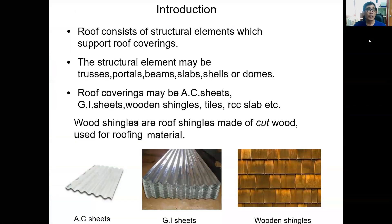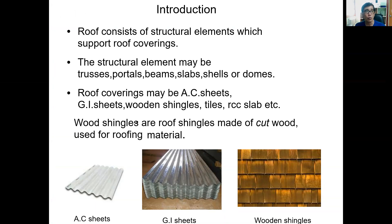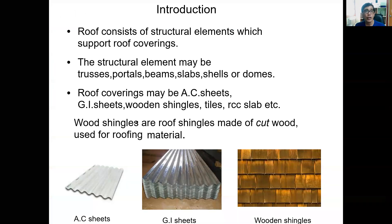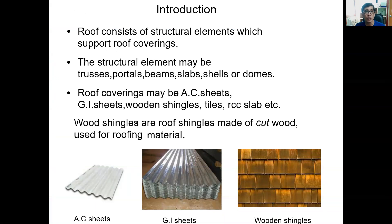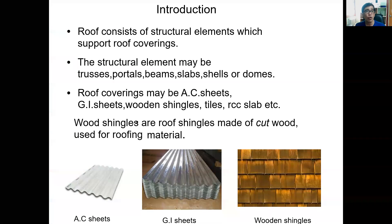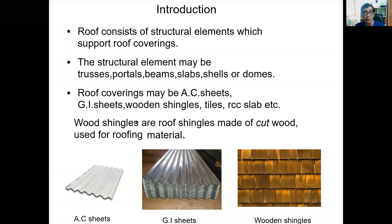The roof system consists of a structural element which supports the roof covering. Structural elements may be trusses, beams, slabs, shells, or doors. Roof covering may be AC sheets, GI sheets, wooden shingles, tiles, RCC slabs, and others. Wood shingles are roofing shingles made of cut wood. Other available roofing materials include asphalt shingles and porcelain tiles.